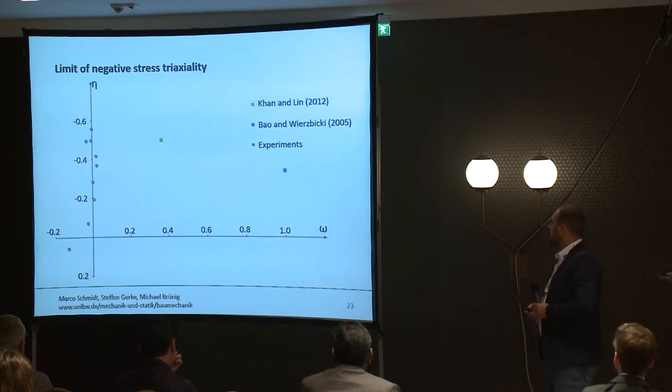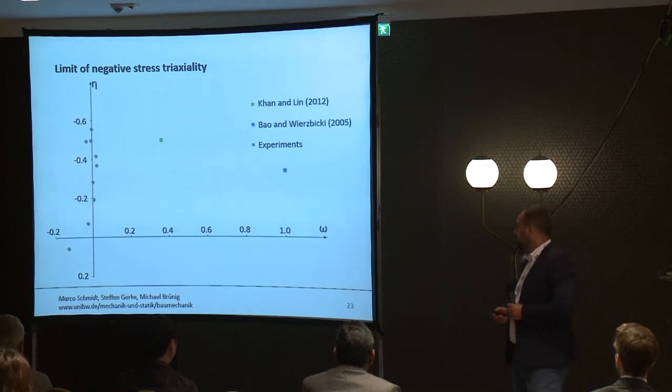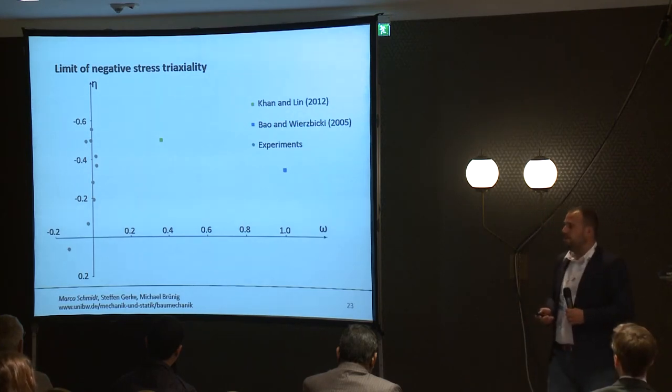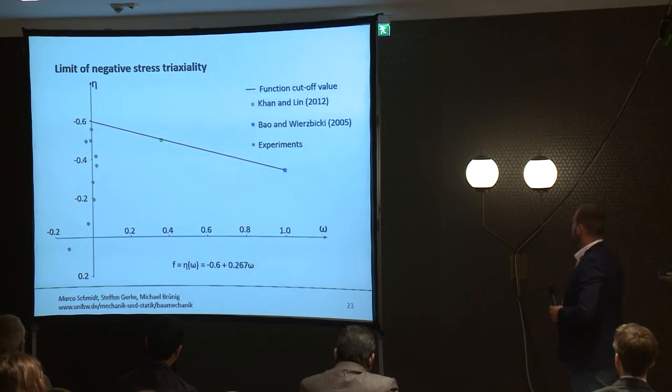What does that mean for the cut-off value? In this diagram our results of the nine different load combinations are shown with the green dots. All specimens fractured in our experiments, therefore the cut-off value has to be minus 0.56 for a Lode parameter nearly zero. In combination with other proposed limits, we want to propose a function for the cut-off value below which no damage occurs and ductile materials don't fail.